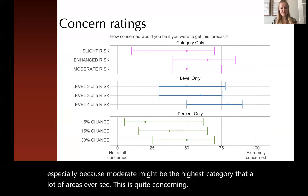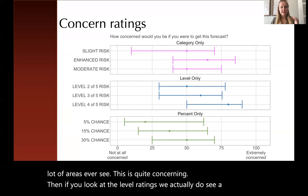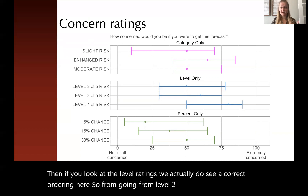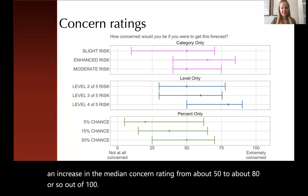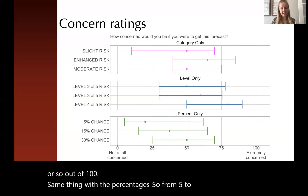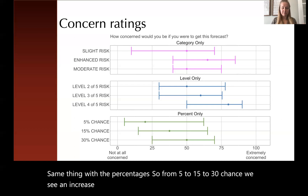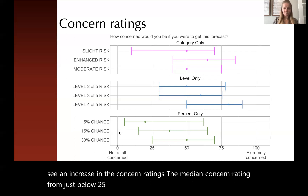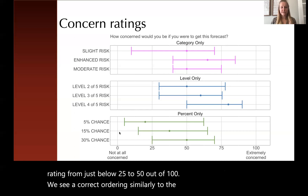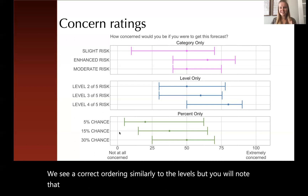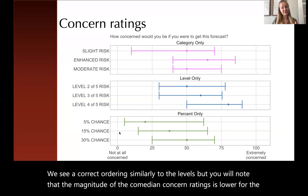When you look at the level ratings, we do see a correct ordering — from level 2 to 3 to 4, we see an increase in the median concern rating from about 50 to about 80 out of 100. Similarly with the percentages, from 5 to 15 to 30% chance, we see an increase in the median concern rating from just below 25 to 50 out of 100. The ordering is correct, similar to the levels, but the magnitude of the median concern ratings is lower for the percentages than for the levels.